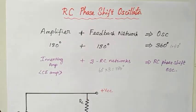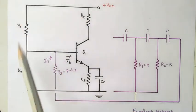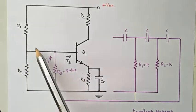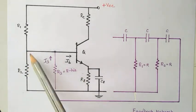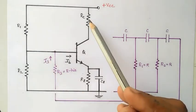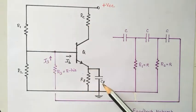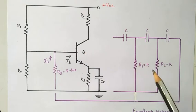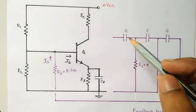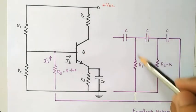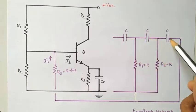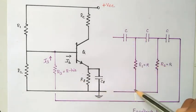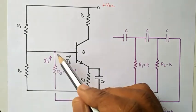Now we see the circuit diagram. The black-colored marked circuit is nothing but the amplifier — the common emitter amplifier. These two resistors are biasing resistors; here we have used voltage divider bias. This is the load resistance RC, this is the emitter resistance and bypass capacitor. The violet-colored marked circuit is nothing but the feedback network, where we have three RC networks: the first one, the second, and the third one consisting of a capacitor and resistor. These three RC networks produce the 180-degree phase shift at the input side.